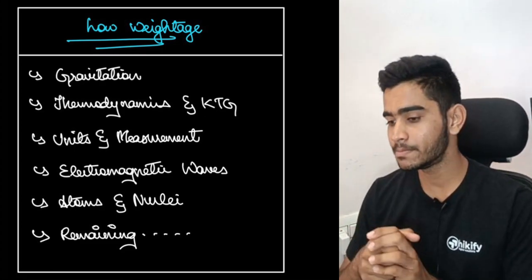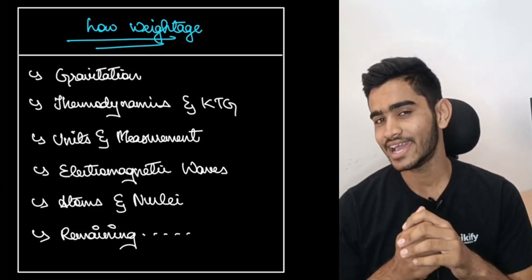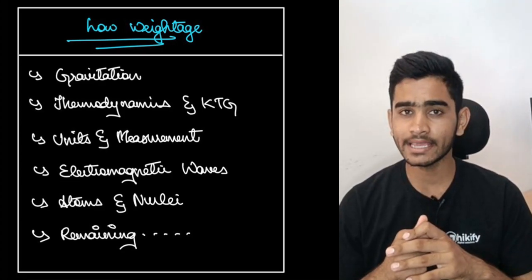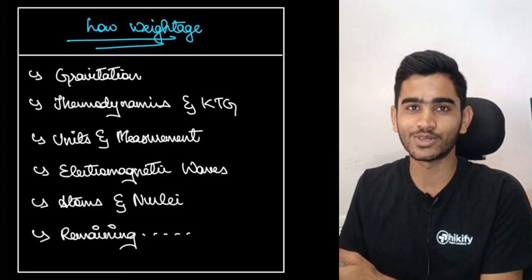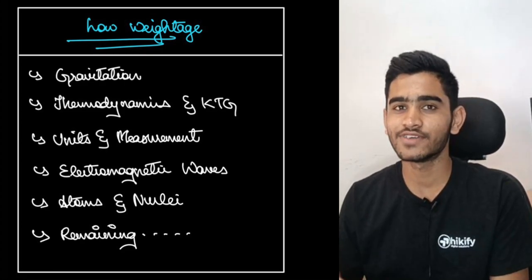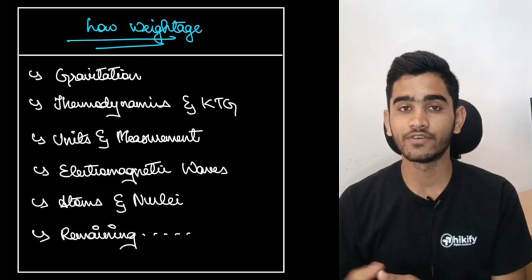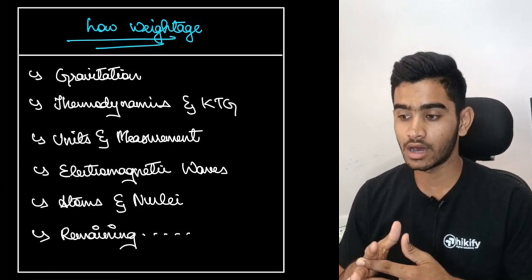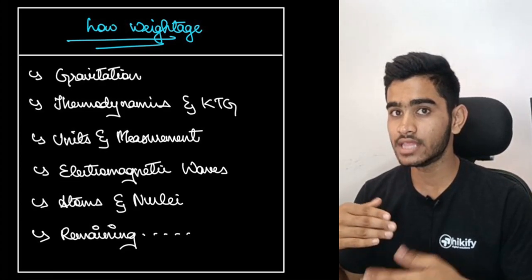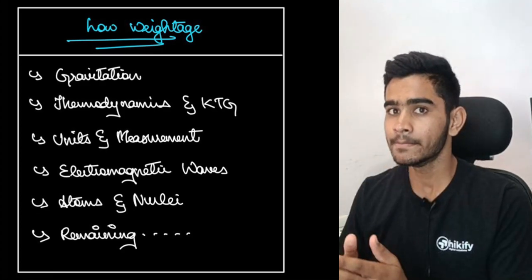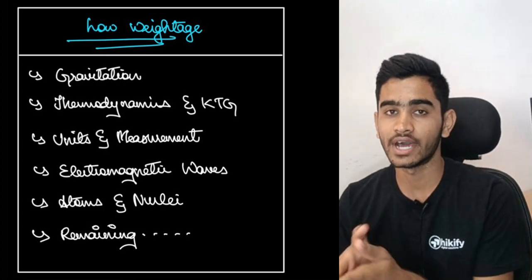So that is one thing which you should keep in mind and then electromagnetic waves is again a small unit but it carries a less weightage but as I have been telling in my previous videos about low weightage chapters it's not that you should completely leave them out. You should be considering these chapters while you are preparing but there should be a difference in the time which you will be allocating for these particular units because at least one question comes from these units. That is the reason why they are there in the syllabus and that should tell you that you should study them but there should be a difference in the time which you give for these chapters compared to the high weightage chapters.